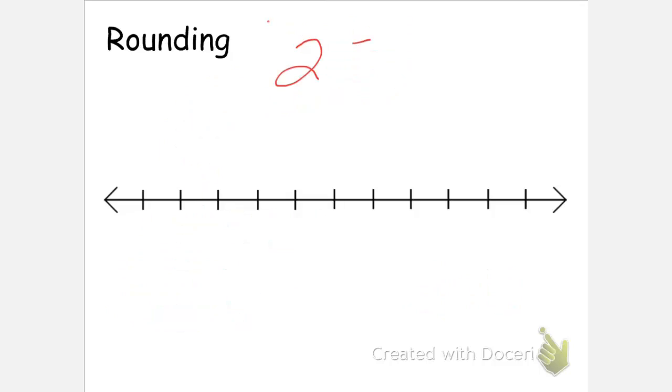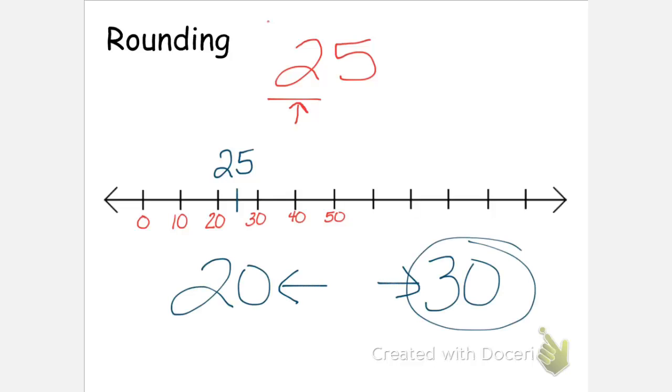As a second example, if we took the number 25 and rounded it to the tens place, we could count by tens on our number line. And you can see that 25 would fall exactly in the middle of 20 and 30. So we would have a choice of rounding it either down to 20 or up to 30. Traditionally, it would be rounded to 30. However, you do have a choice. If you have a lot of numbers that you're going to be rounding and they are all falling directly in the middle of two digits that you could round it to, it's a good idea to round about half of them up and about half of them down. You'll have less rounding error if you do that.